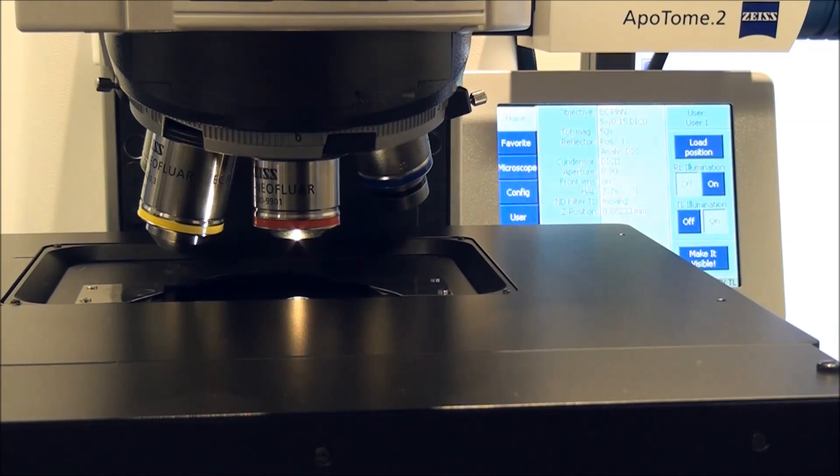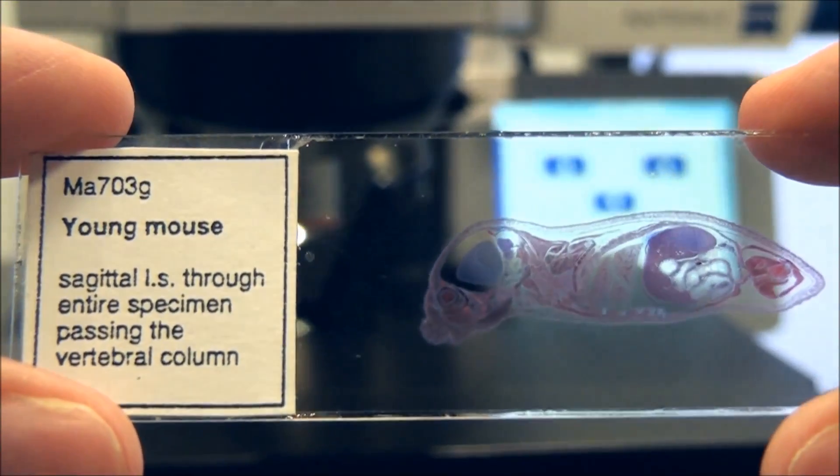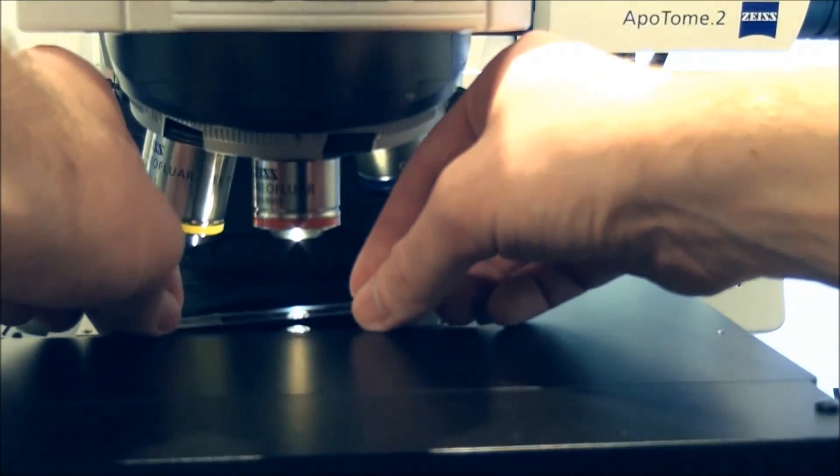Step 4: Lower the stage by rotating the focus knobs or pressing the load position button on the attached touch screen. Place your high contrast, stained specimen face up on the stage. The cover slip should face towards the objective.